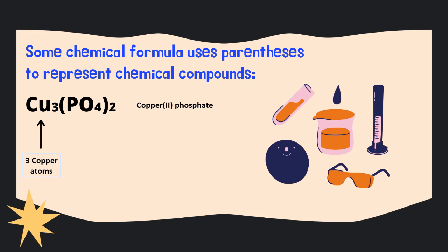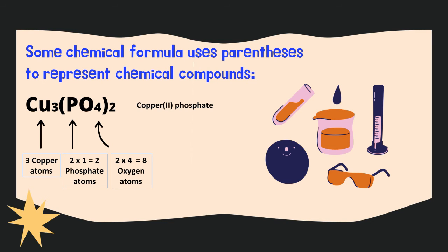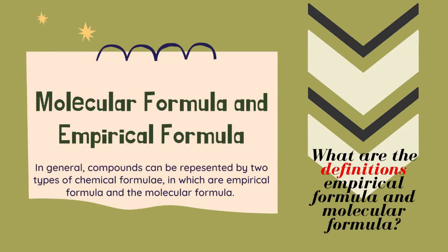Let's look at another example: copper(II) phosphate. Copper(II) phosphate consists of Cu, which represents copper — it has three copper atoms — and PO4 included in parentheses. P represents phosphorus, and we have two times one, giving two phosphorus atoms. For oxygen, also inside the parenthesis, we have four times two, giving eight oxygen atoms. In conclusion, copper(II) phosphate consists of three copper atoms, two phosphorus atoms, and eight oxygen atoms.